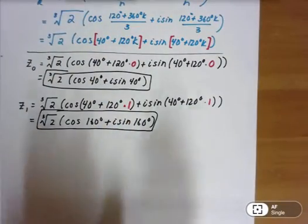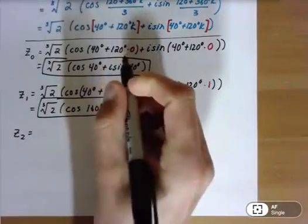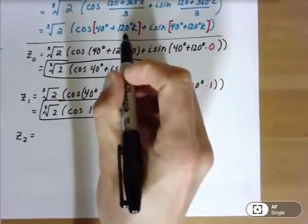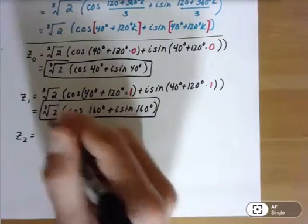And now the last one, it's the exact same thing again, but now where we see k, we're substituting 2. So we're going to substitute 2, so this would be 240, 240 plus 40.